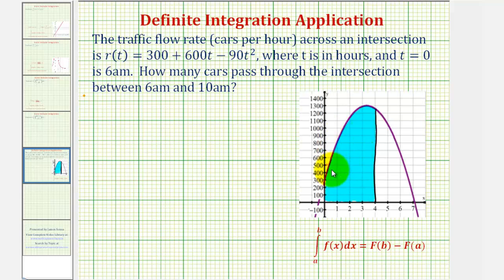And since this function is non-negative on this closed interval, we can determine the total number of cars passing through the intersection by determining the value of a definite integral. This is one reason why a definite integral is sometimes called the accumulation function. We can use it to accumulate the total number of cars passing through the intersection in this situation.